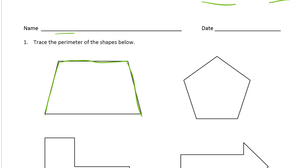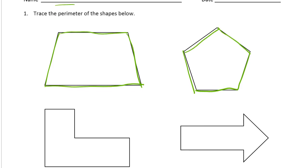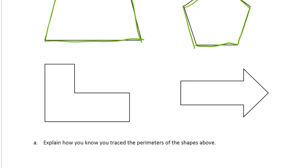If it was area we would be shading the inside of the shape. Tracing the perimeter means just going, drawing, tracing around the edge of the shape like that, the outside edge. This practice just helps you remember that it's around the outside as perimeter. The distance around the outside of the shape.